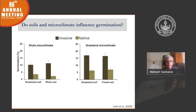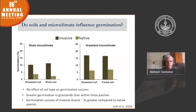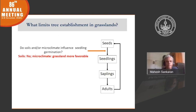What are the results? On the left is germination inside the shola, and on the right is inside the grassland. First, there's no effect of soil type on germination success — comparing grassland soil versus shola soils, we see no difference. Second, there tends to be greater germination in the grasslands, which is counter to what we expected. We expected less germination in grasslands, but in fact we see more germination there for both the native and the invasive species. Third, the germination success of the invasive is three times greater than the native species. So: soil has no effect, and microclimate is actually the opposite of expected — grasslands are more favorable for germination. The demographic bottleneck does not seem to be occurring at this stage.